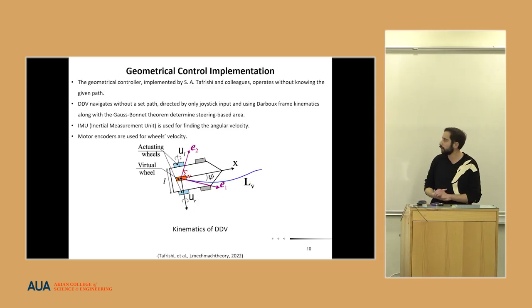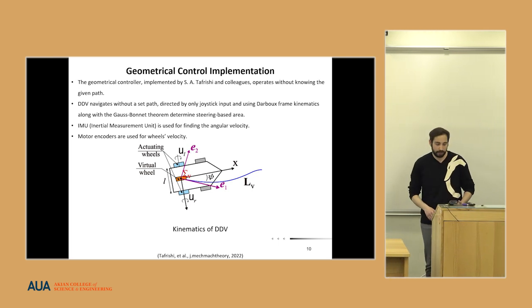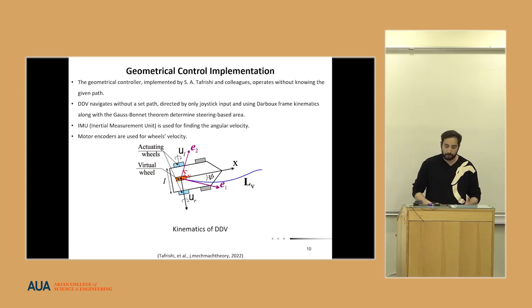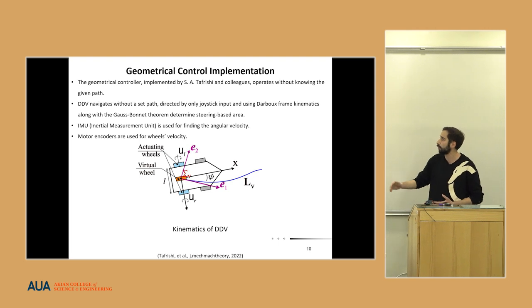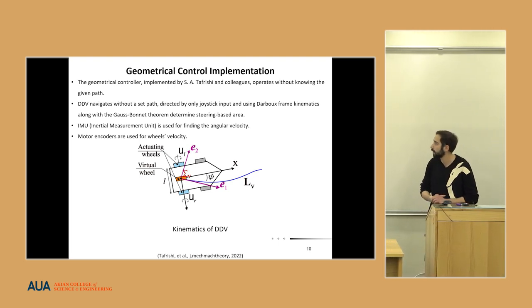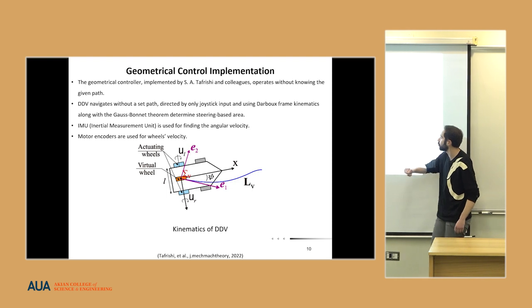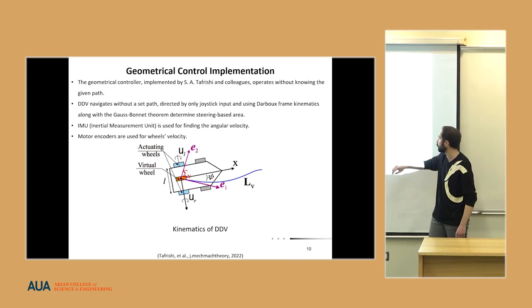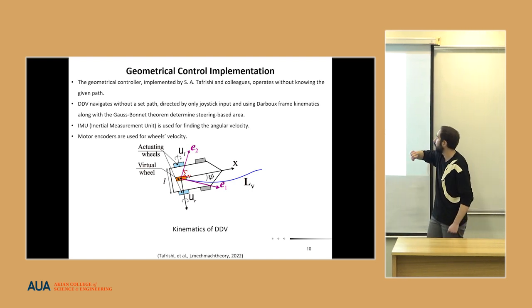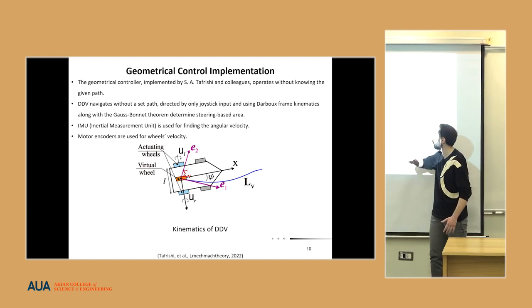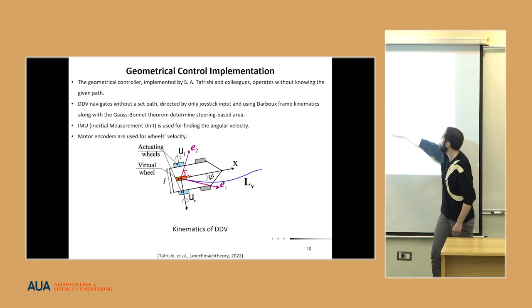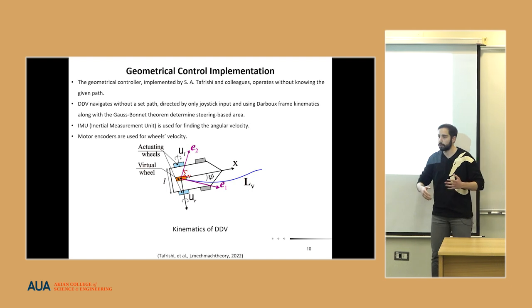This technique was implemented by Tarfishi and his colleagues, which operates without knowing the given path, directed only by joystick, using the Darboux frame kinematics along with the Gauss-Bonnet theorem to determine the steering-based area. For their experiment, they used an inertial measurement unit for finding the angular velocity, and motor encoders. The e2 and e1 show the Darboux frame unit vectors.